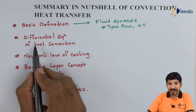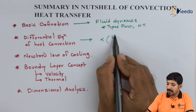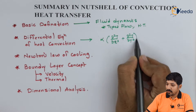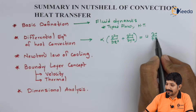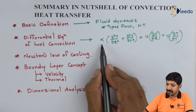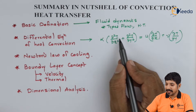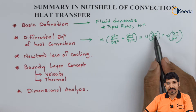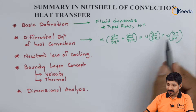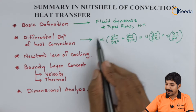In the next topic we talked about the differential equation of heat convection. The general equation that we got was: alpha times (∂²T/∂x² + ∂²T/∂y²) = u(∂T/∂x) + v(∂T/∂y), where alpha is the thermal diffusivity. On the left-hand side we have the second order differential for temperature T, and on the right-hand side we have the first order differential, where u is velocity in x direction and v is velocity in y direction. We also covered the derivation and the assumptions required.